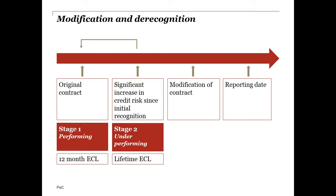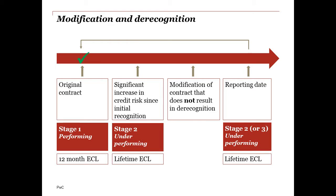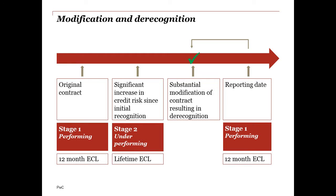If the loan is seen as a continuation of the same loan, then that applies for impairment purposes too. The loan was in Stage 2 and it will almost certainly continue to stay in Stage 2, and a lifetime ECL will continue to be booked. If the loan is so significantly changed that it's seen as a new loan, then that too applies for impairment purposes — the loan goes into Stage 1 and a 12-month ECL will likely be booked.